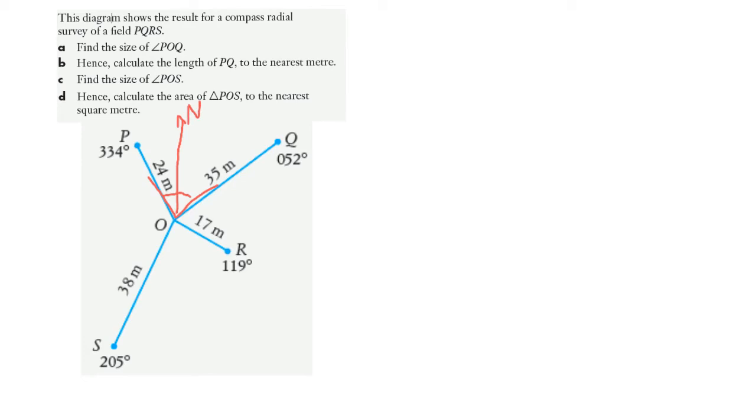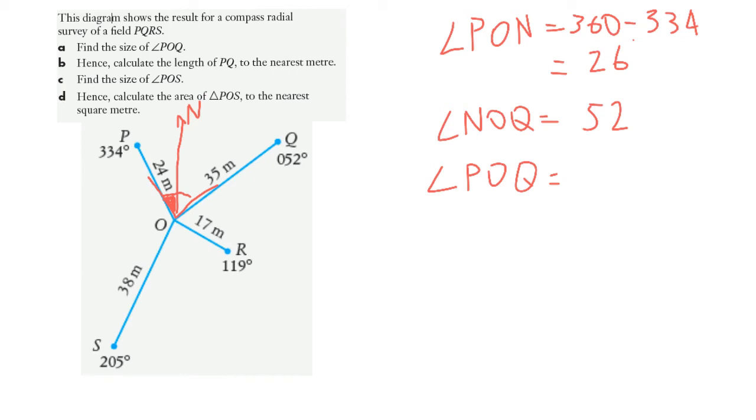So to find our angle PON, that's going to be 360 minus 334, which is 26 degrees. That's this part of my angle. And then the second part of my angle, angle NOQ, is just my very first bearing which is 52 degrees. So by adding those two together, angle POQ is equal to 78 degrees. 52 plus 26, 78 degrees.